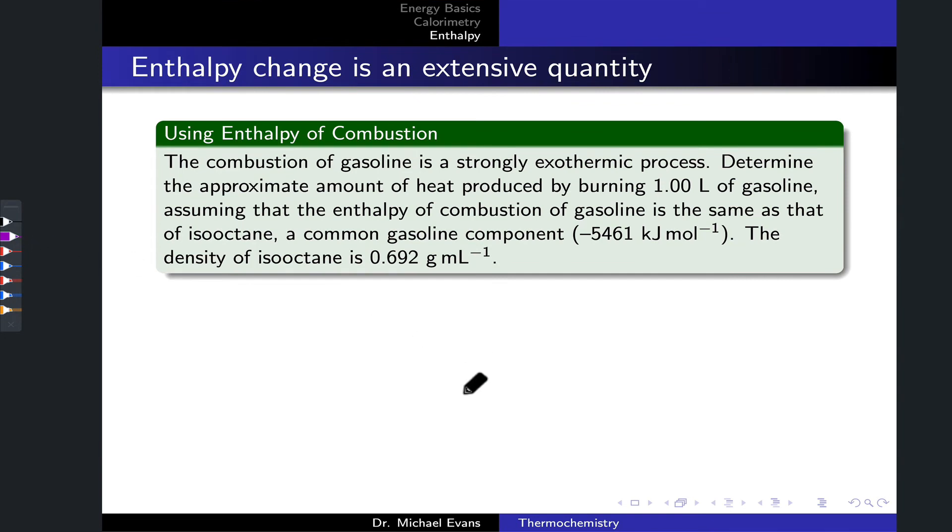Let's work a practice problem with enthalpy of combustion. Gasoline is naturally a strongly exothermic process when combusted with oxygen, and we take advantage of this to power internal combustion automobiles. We want to know the amount of heat produced by burning a liter of gasoline. We've got a volume of gasoline and may need to know the quantity we're dealing with. We'll assume the enthalpy of combustion of gasoline is the same as that of isooctane, which is one of the major components of gasoline.